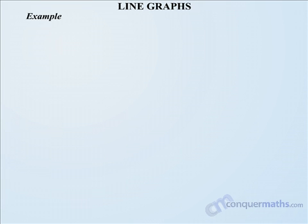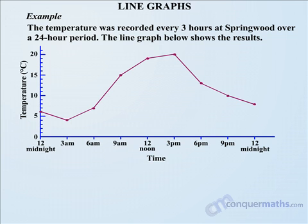In this lesson we are looking at line graphs. We will look at an example. The temperature was recorded every 3 hours at Springwood over a 24 hour period and the line graph below shows the results. Now let's have a bit of a look at this line graph.